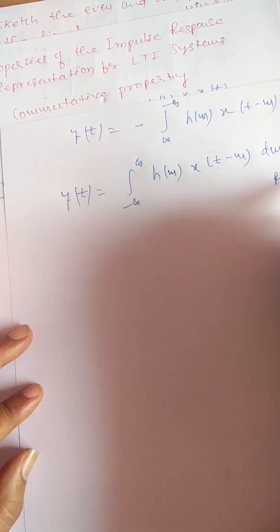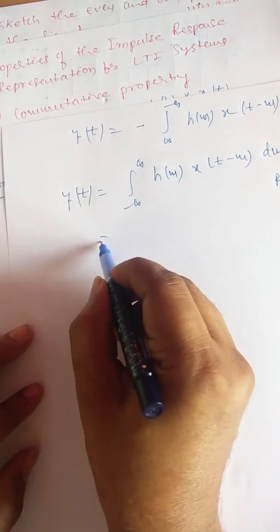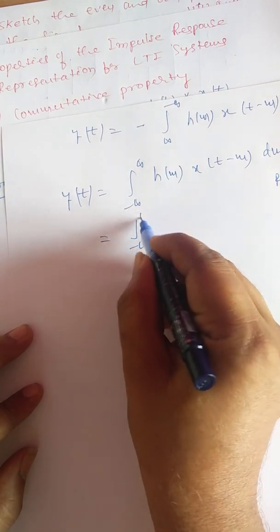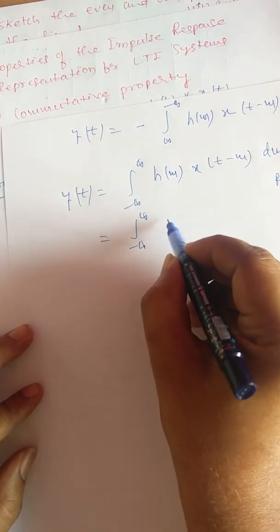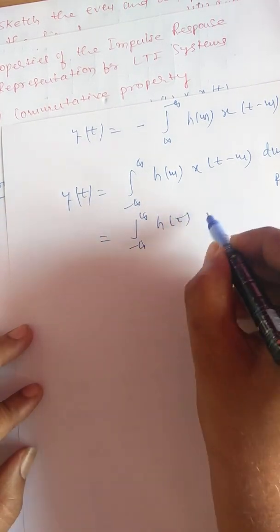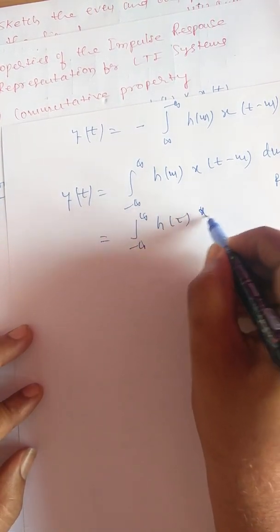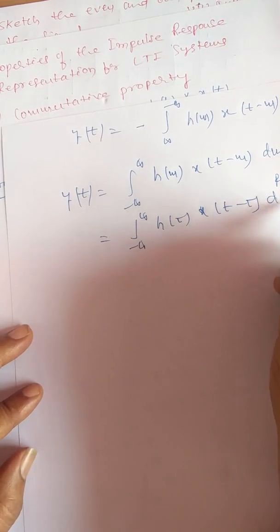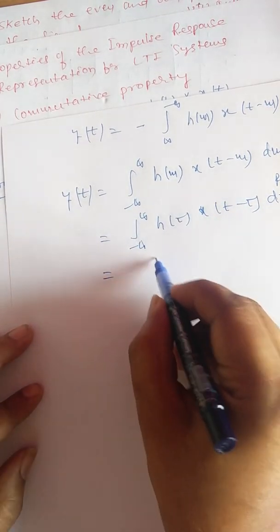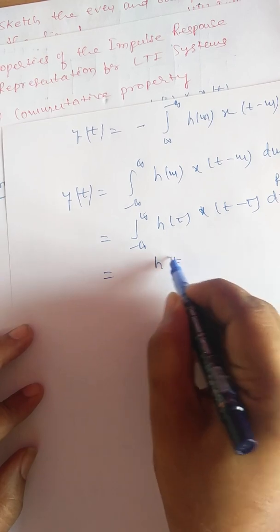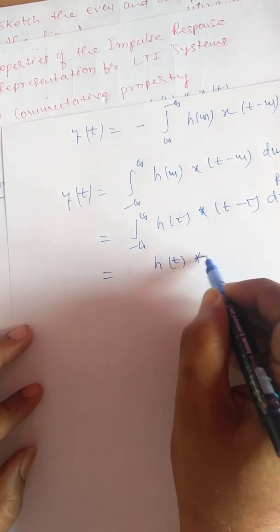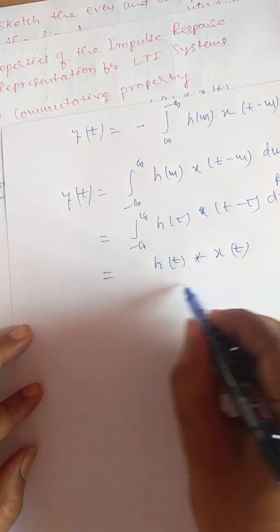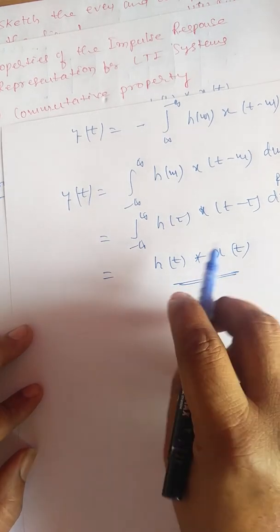Now replace m by τ: the integral becomes the integral from minus infinity to plus infinity of h(τ) into x(t minus τ) dτ. This is nothing but h(t) linearly convolved with x(t), and thus the commutative property is proved.